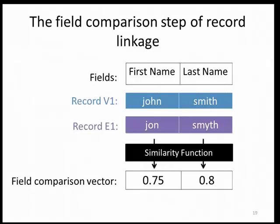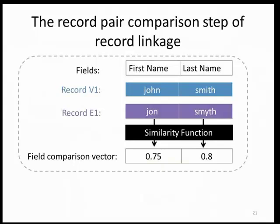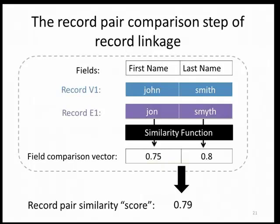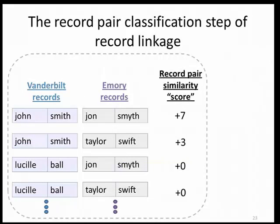The next step in record linkage is record pair comparison. In this step, the field similarities are consolidated into a single record pair similarity score. The inputs are the field comparison vector and some weighting function indicating the importance of some fields over others, and the output is a single similarity score for the entire record pair. The final step in record linkage is record pair classification — you have all your record pairs with similarity scores calculated and associated with each record pair.